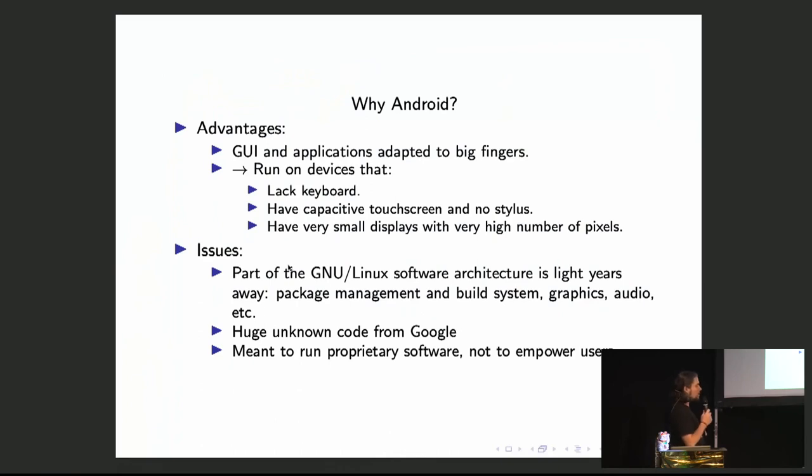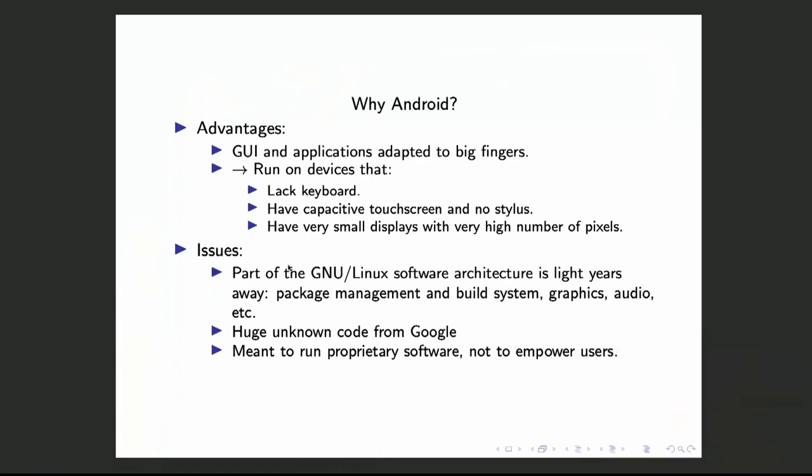We have an Android distribution because it's adapted to devices with capacitive touchscreens, high pixel density, and large fingers — so you need to adapt all applications and the graphical interface. Linux on smartphones is still a work in progress, and Android is also mentor-and-proprietor software, so it's not ideal from a freedom perspective and not really meant to empower users.